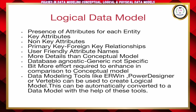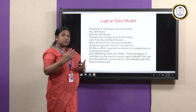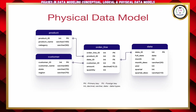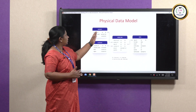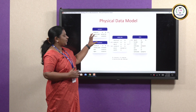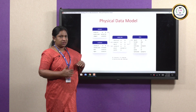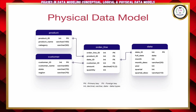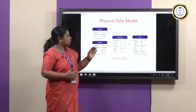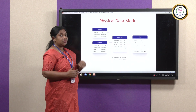As we are using tools here, the enhancement process is also easy, and the model can be converted to the next level as well. The third stage of data modeling is the physical data model. As you can see in the picture, one more thing is added here — the data type of each attribute. For example, product ID is of type integer, product name is of type character, and category is of type character.